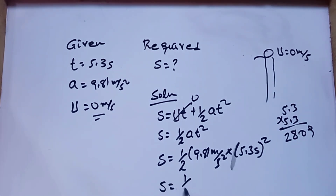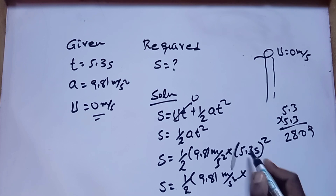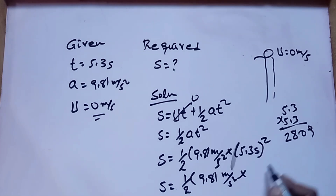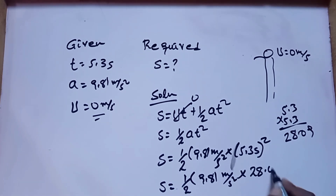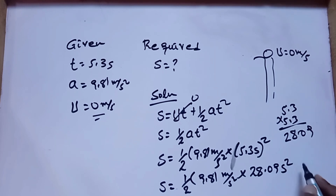So displacement, i.e., the height of the building, is equal to 1 over 2 times 9.81 m/s² times (5.3)², which gives the height of the building in meters.